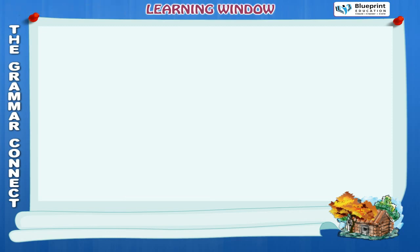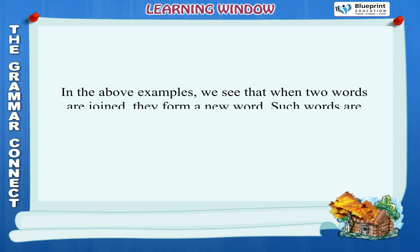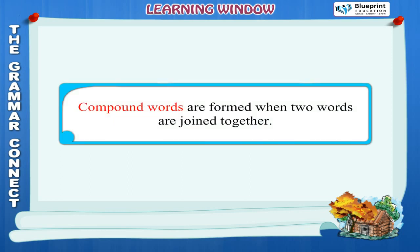In the above examples, we see that when two words are joined, they form a new word. Such words are called compound words. Compound words are formed when two words are joined together.